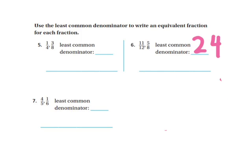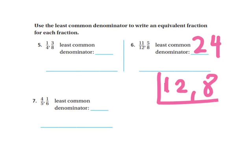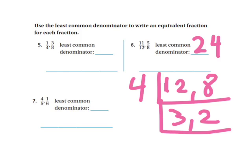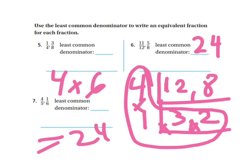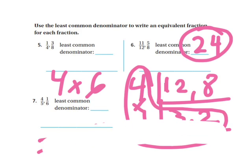Now I'm going to do the same thing using the ladder method — either method is fine, just do whichever one you like best. I put my two denominators, 12 and 8, in a bracket. 12 and 8 are both divisible by 4. 12 divided by 4 is 3, and 8 divided by 4 is 2. I can't divide 3 and 2 by anything except 1. I circle the side and the bottom of my ladder making an L for least common denominator, then multiply all the numbers inside: 4 times 1 is 4, and 3 times 2 is 6, so I get 24. So once again, 24 is my least common denominator.